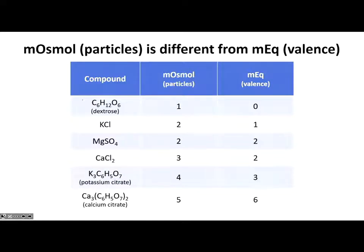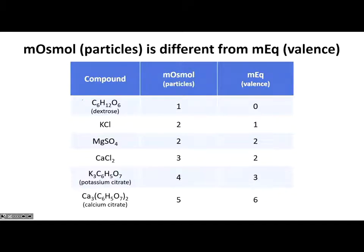Calcium chloride, CaCl2, splits into three things: one calcium, one chloride, one chloride — that's three particles. The milliequivalents: calcium has a charge of plus two, giving two milliequivalents. For the two chlorides, each has a valence of one, so two times one is two negative milliequivalents. So we still get a total of two milliequivalents, but three particles.